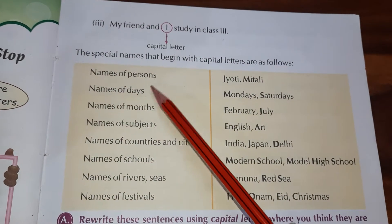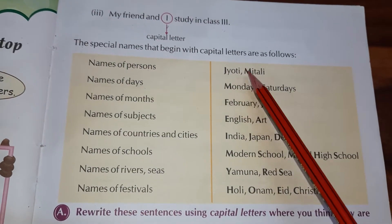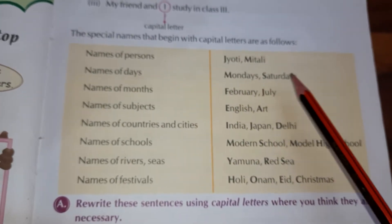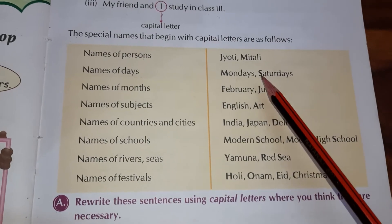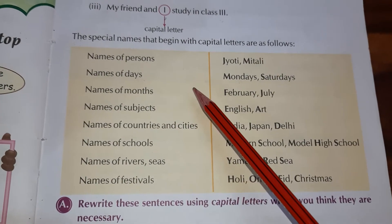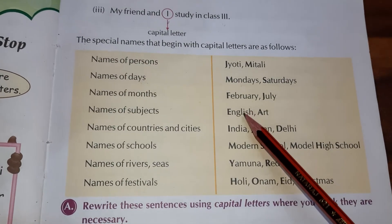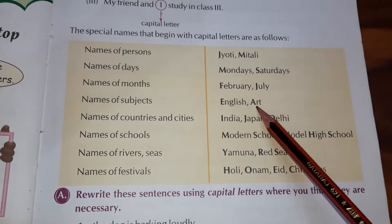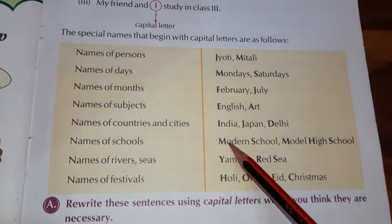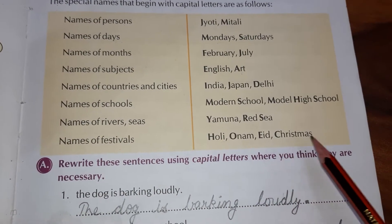These names always begin with capital letters. Names of persons always begin with capital letters. Names of days — it may be Monday, Sunday, Tuesday, Thursday, anything — they always begin with capital letters. Names of months always start with capital letters. Names of subjects, it may be English, Hindi, Arts, Music, anything. And names of countries, cities, schools, rivers, seas, and festivals always begin with capital letters.